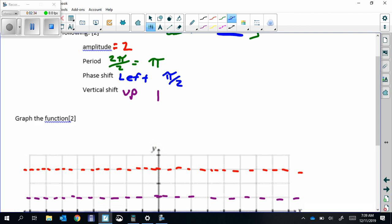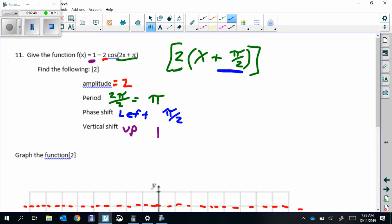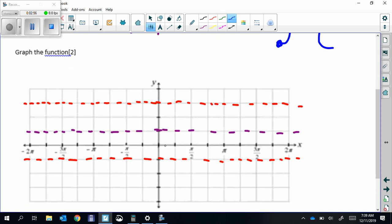Phase shift is left pi over 2. That's the first point we're going to plot. This is a negative cosine, so the graph is going to look kind of like that. The first point we plot is going to be on the bottom, the lowest point. Left pi over 2 at the bottom, that's our first point.